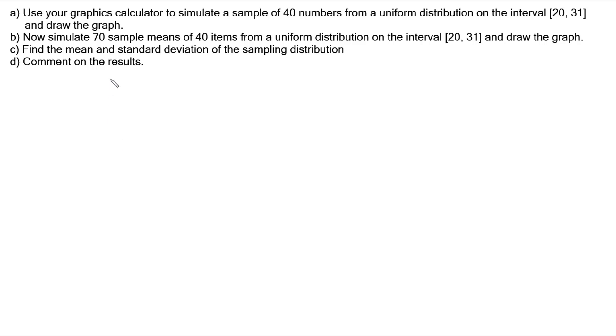Hi, in this video I'm looking at using a graphics calculator to simulate sampling 40 numbers from a uniform distribution on the interval of 20 to 31 and drawing a graph. We're going to simulate 70 sample means, finding the means of 70 samples, where each of those samples have a size of 40 from that same interval, and draw the graph of the sample distribution, then find the mean and standard deviation of that sampling distribution, and comment on what we find out.